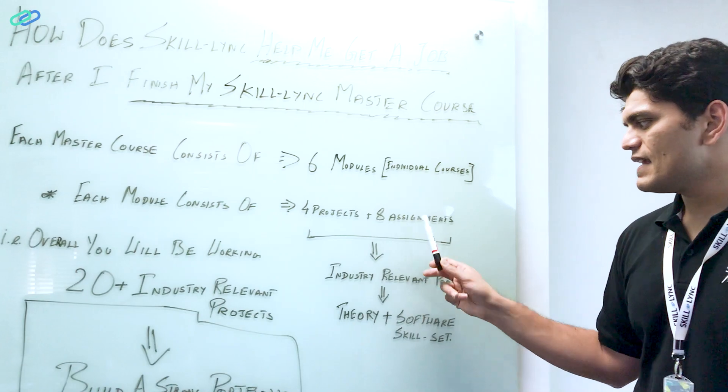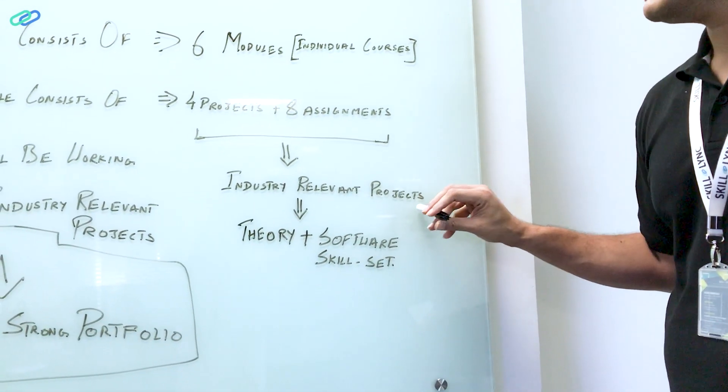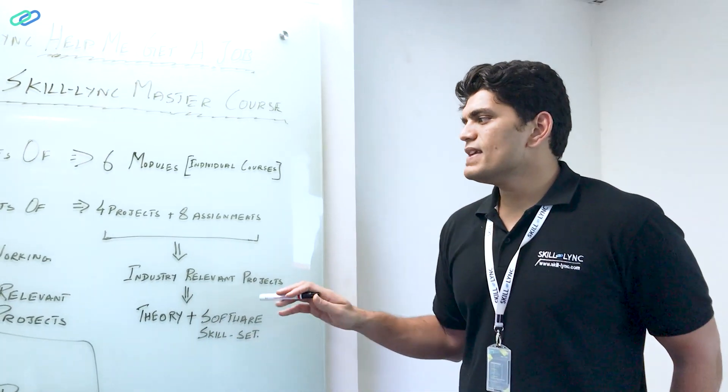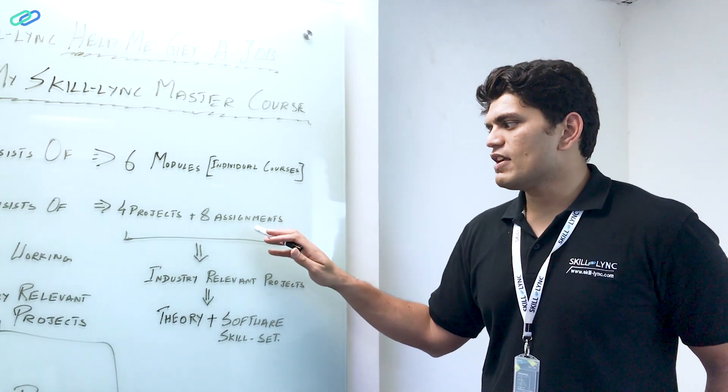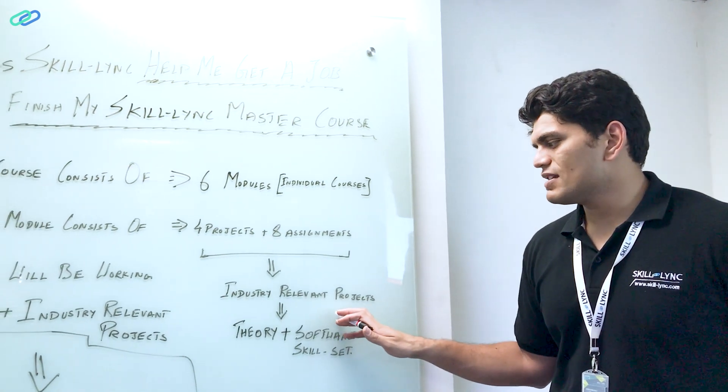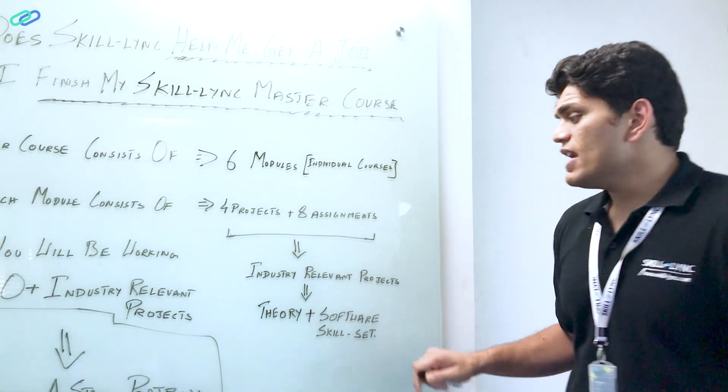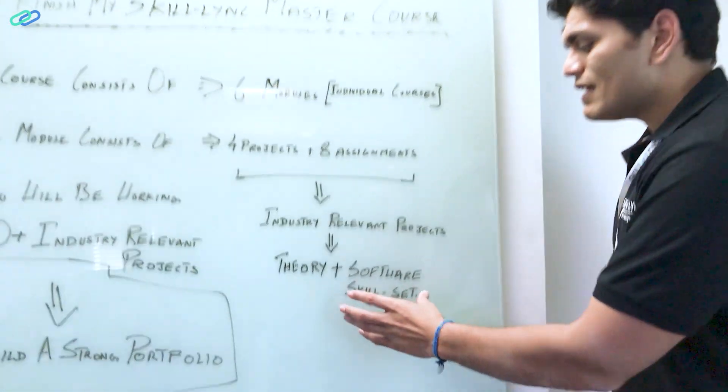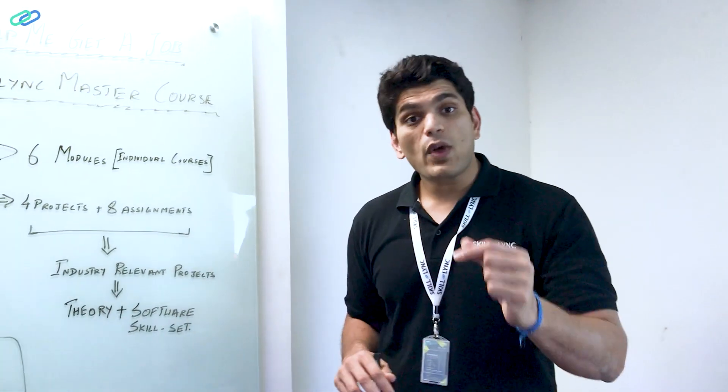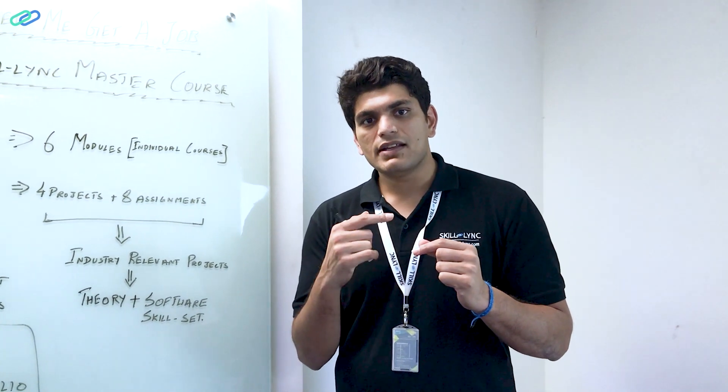Each module, which is basically each individual course, consists of four projects and eight assignments. All these four projects and eight assignments are industry-relevant projects. If you go into an automotive industry, they will be using the same type of projects or assignments for their day-to-day activities. We make sure that we cover the right theory with the essential software skillset that you need to know in order to do well in your job.